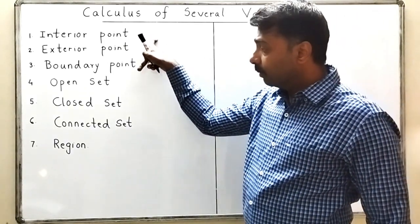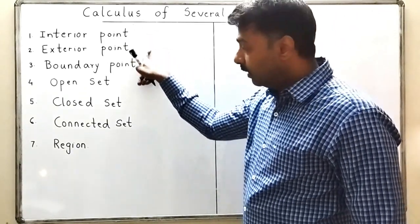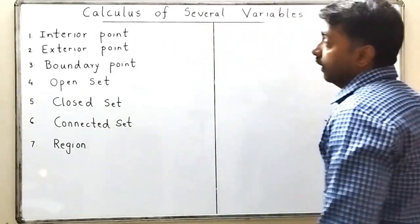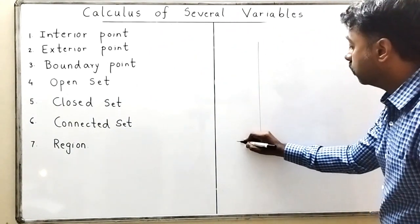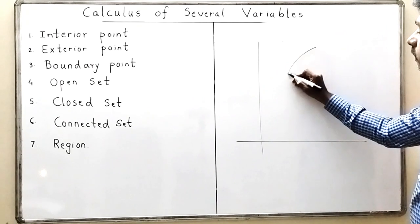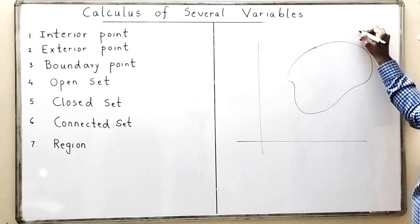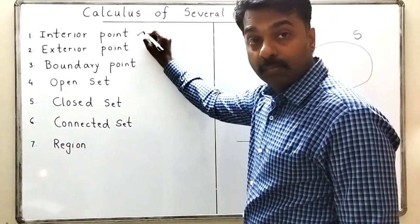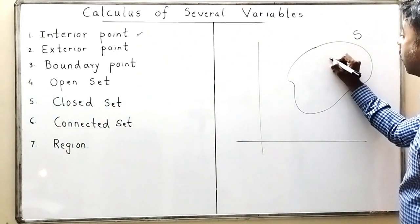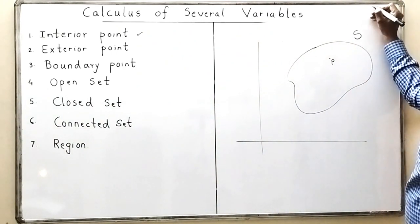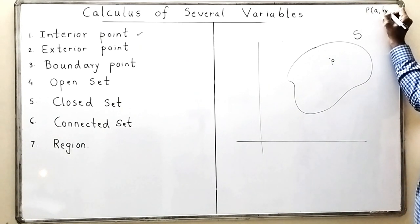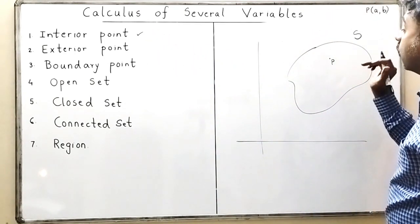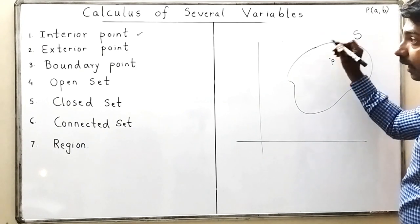Now here are some important terminologies that we have to understand — these are definitions we have to remember. First, what is an interior point? In the set R², I will take one set S and take a point inside that set to explain what is meant by an interior point. I will take a point P with coordinates (u, v) and check whether this point is an interior point or not.